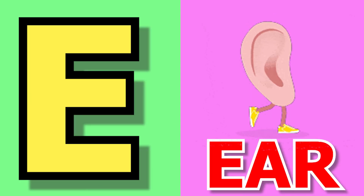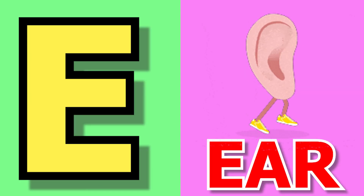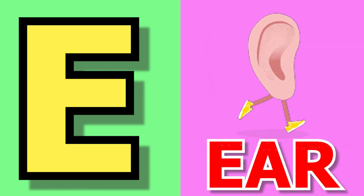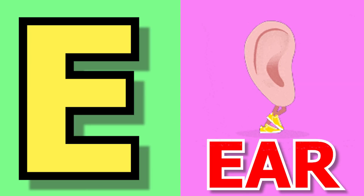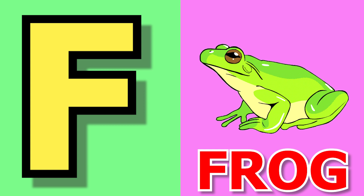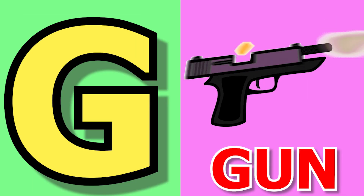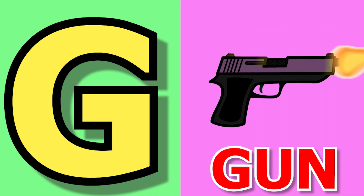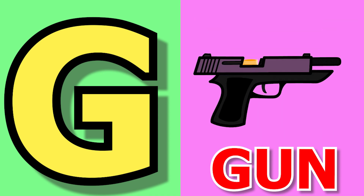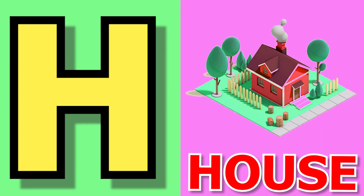E for ear, ear means can. F for frog, frog means mandak. G for gun, gun means banduk. H for house, house means ghar.